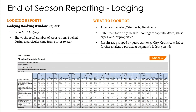Another report we really like for lodging is the booking window report, found under the Reporting tab in the lodging-specific area. This report shows the number of reservations booked during a particular time frame prior to arrival, diving deeper into the advanced booking window. Results can be broken out not only by region or MSA but also by guest trade, city, or country. This complements the lodging pacing report by allowing you to take a deeper dive into advanced booking windows, average daily rates, total number of rooms, and total number of bookings for each booking window.